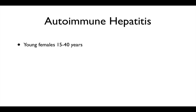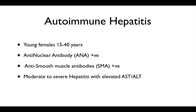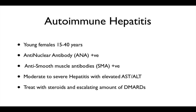Autoimmune hepatitis is covered here for completeness. It typically affects young females between 15 and 40. They have anti-nuclear antibody (ANA) positive, may have other autoimmune conditions, and also have anti-smooth muscle antibody (SMA) positive. They will have elevated AST and ALT with a moderate to severe hepatitis picture. Treatment is steroids; if steroids don't work, you escalate to DMARDs such as azathioprine or methotrexate. Importantly, it should respond to steroids, unlike other conditions causing hepatitis.